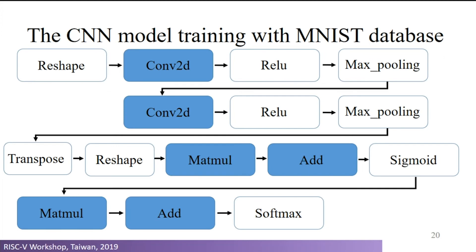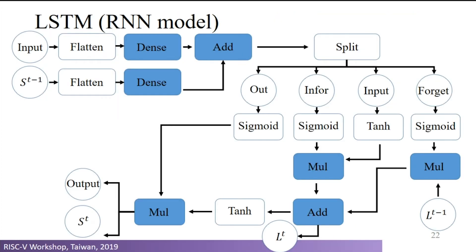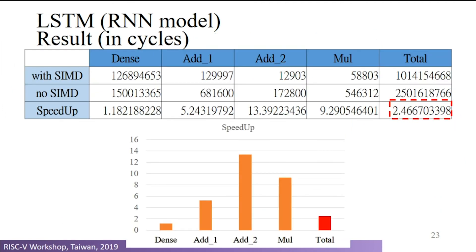The next model is based on the previous one but adds another layer of convolution. The blue nodes again indicate SIMD instructions, and in this model we can achieve approximately a 2.52x speedup. The last model we use for testing is an RNN model — specifically a basic LSTM model — where the blue nodes show SIMD instruction usage, achieving a 2.46x speedup.